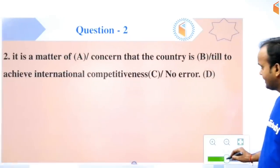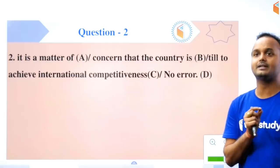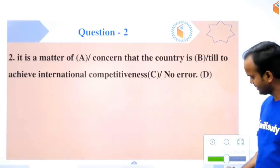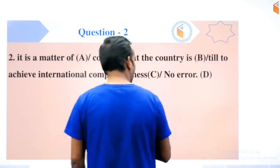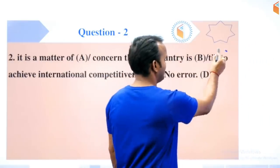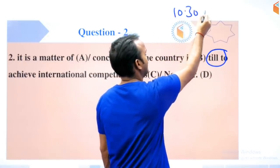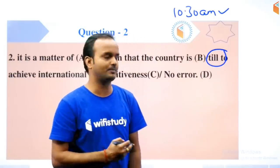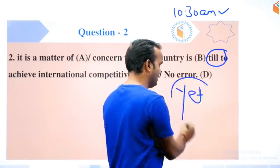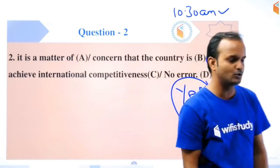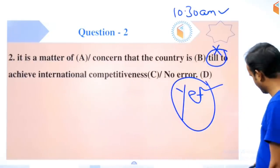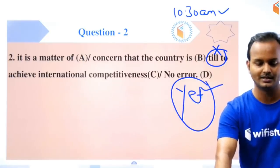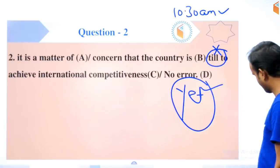The second question on your screen: 'It is a matter of concern that the country is still to achieve international competitiveness.' We've studied many words since childhood, even at basic level. In today's 10 o'clock class, I explained concepts like when to use 'till' and when to use 'yet'. When something hasn't been achieved yet, 'till' is used incorrectly here. Remove 'till' and use 'yet' instead. If you want to know the proper use, you'll need to join our basic rules classes.